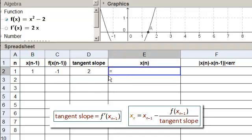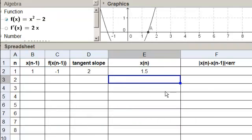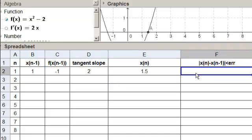Here we have equals xn minus 1, so b2 minus f of that c2 divided by the tangent slope d2. And that's that. Over here we have the error, so equals abs of E2 minus b2. We want that to be less than the error. And it's false.